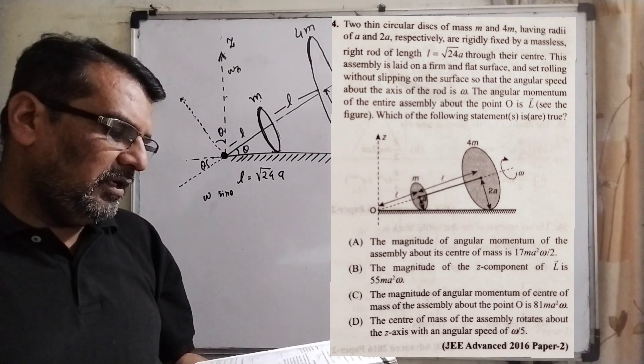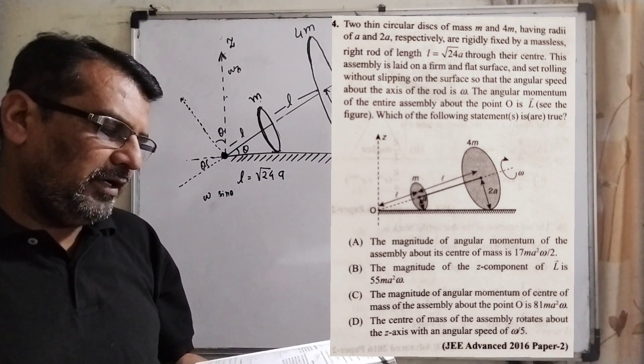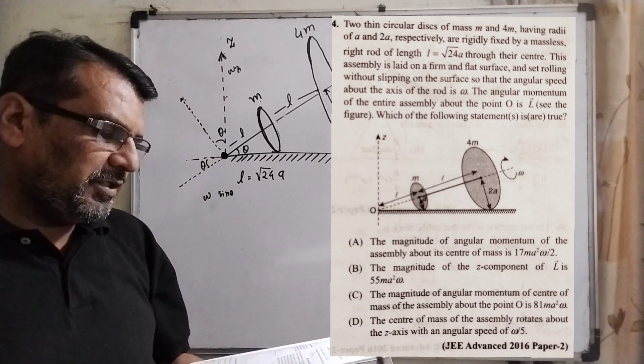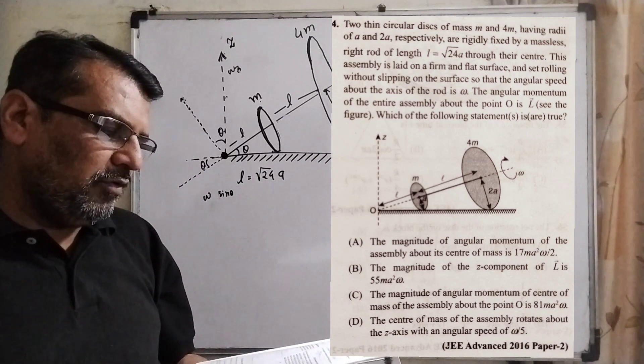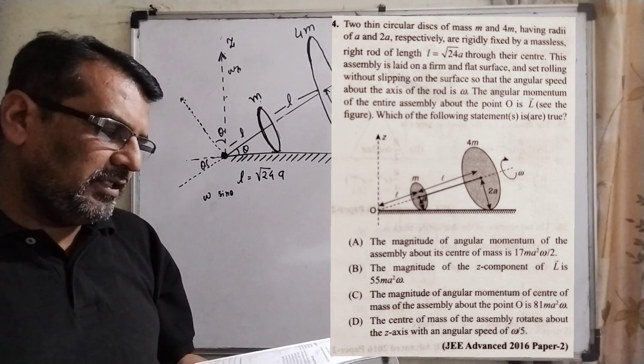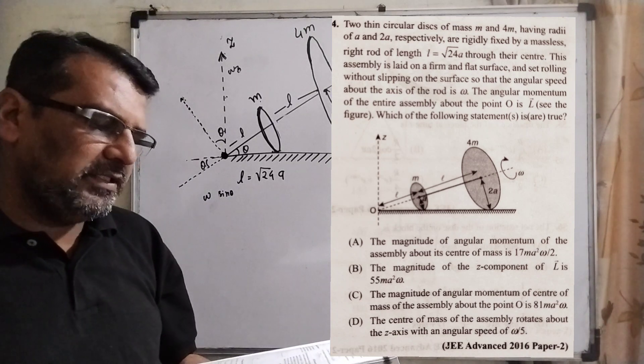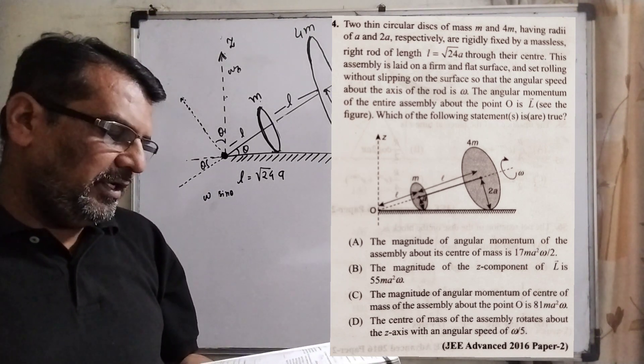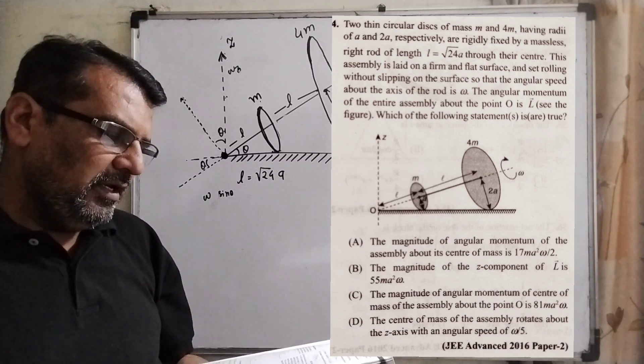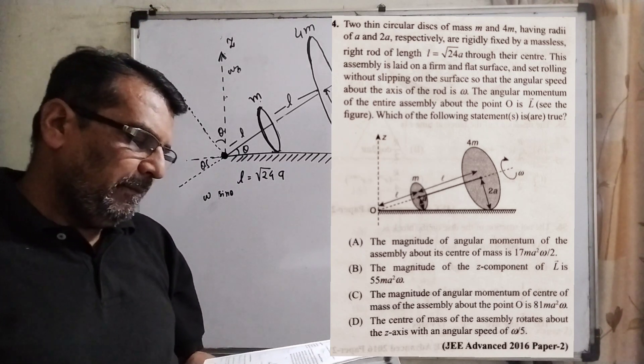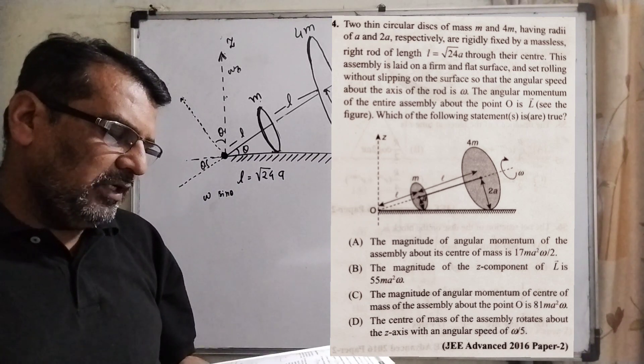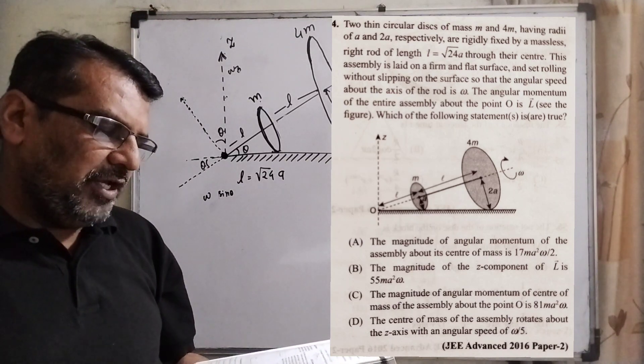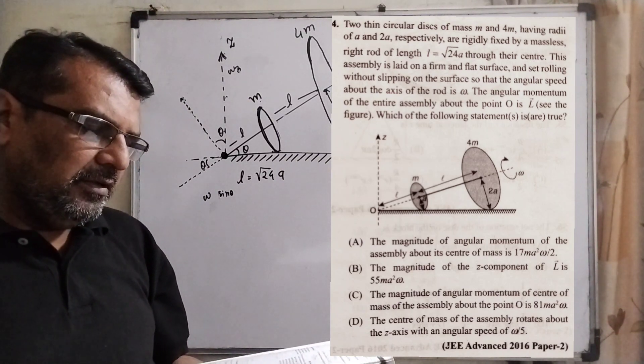The magnitude of angular momentum of the assembly about the center of mass is 17 m a square omega by 2. Option B, the magnitude of the z component of L is 55 m a square omega. Option C, the magnitude of angular momentum of the center of mass of the assembly about point O is 81 m a square omega. And option D, the center of mass of the assembly rotates about the z-axis with an angular speed of omega by 5. This question is asked in JEE Advanced 2016.